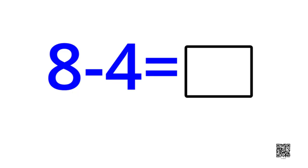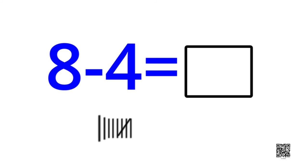I will do one for you and rest you have to do. For example 8 minus 4: let us draw 8 lines - 1, 2, 3, 4, 5, 6, 7 and 8. Out of 8, 4 have been taken away - I will cut 4: 1, 2, 3, 4. How many are left? Count again: 1, 2, 3, 4. So I can say 8 minus 4 is equal to 4.